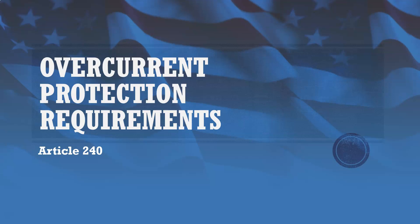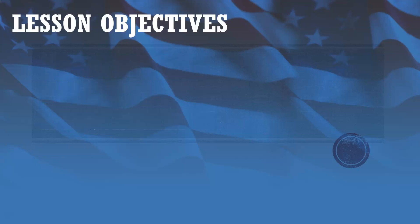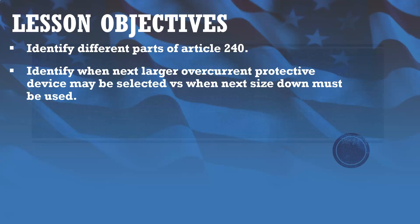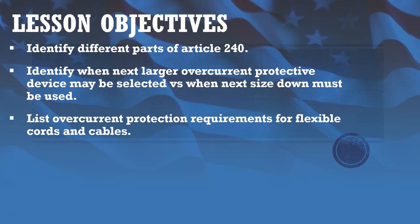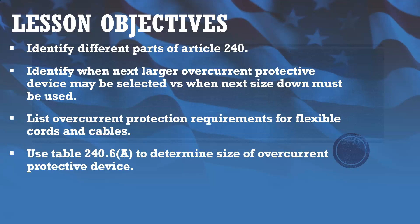This is going to be our third and final lecture for Module 5. In this lecture, we're going to be taking a look at overcurrent protection requirements as specified in Article 240. Our objectives for this lesson are to identify the different parts of Article 240, identify when the next larger overcurrent protective device may be selected versus when the next size down must be used, list overcurrent protection requirements for flexible cords and cables, use Table 240.6A to determine size of overcurrent protective devices, and list where TAP rules are found.